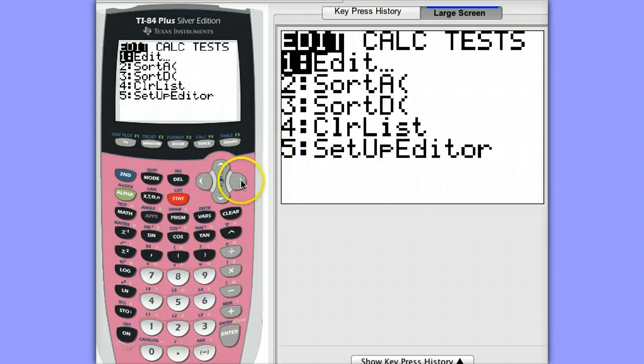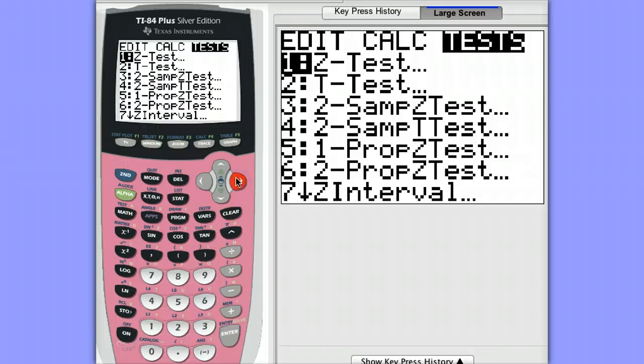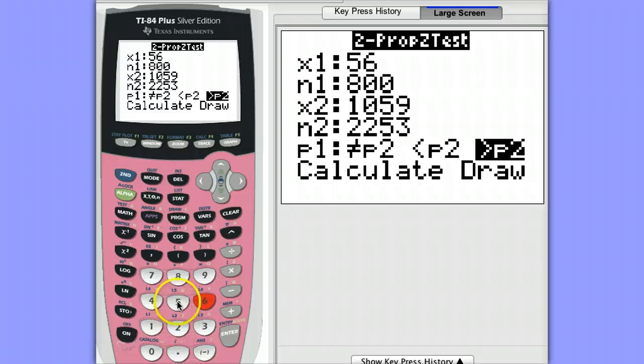To get to this screen I went to stat tests and chose two proportion z-test. We had 56 patients that had heart attacks in the group that received the medication and there was 2,051 patients who received medication.